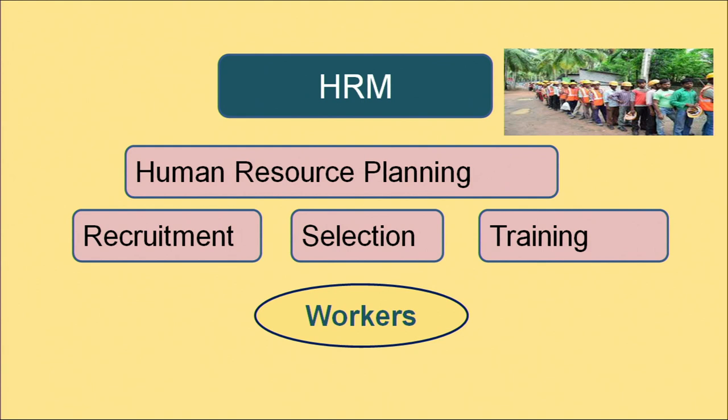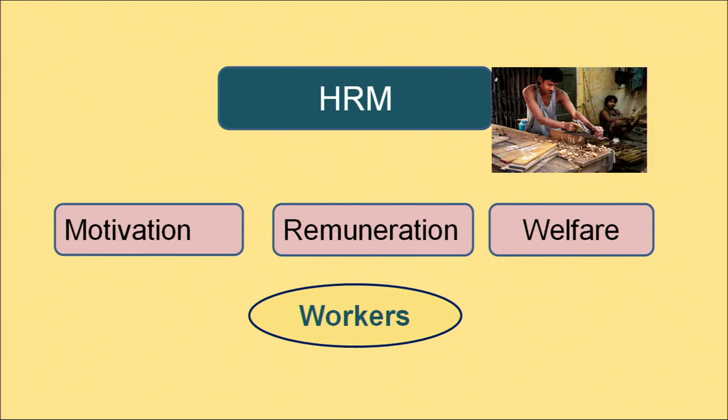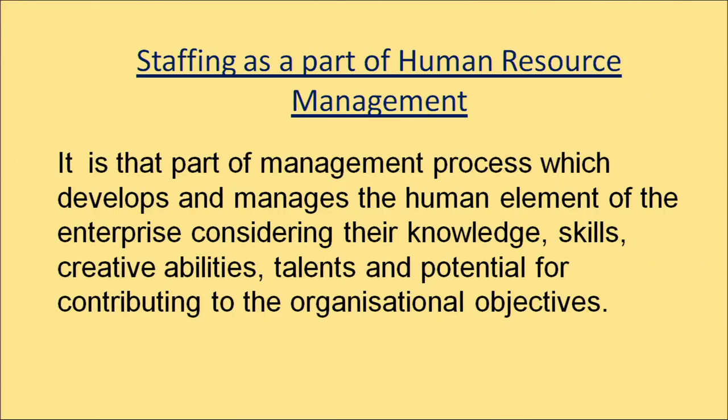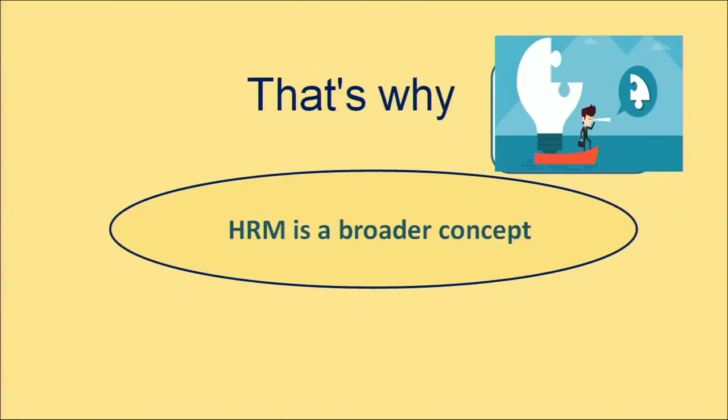Human resource management involves all the functions like human resource planning, recruitment, selection, training, motivation, remuneration, and welfare. Staffing is a part of human resource management. Human resource management is a broader concept whereas staffing is narrower. Staffing is just about employing and developing the people, but human resource management is never limited to that function only — it also optimizes the work of the employees and considers knowledge, skills, creative abilities, talents, and potential for contributing to organizational objectives.